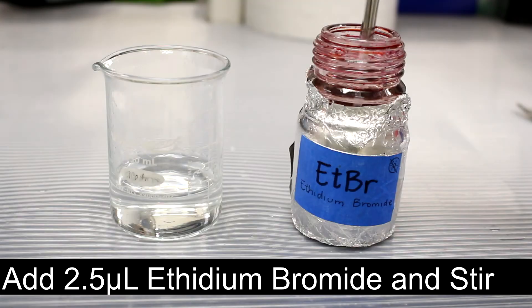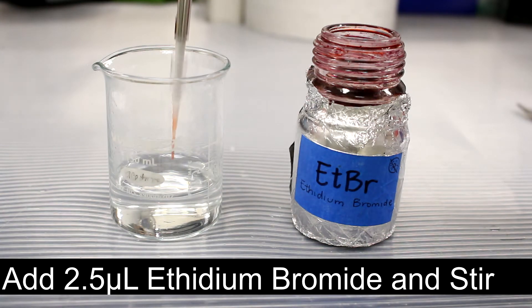2.5 microliters of ethidium bromide is then added to the cool agarose solution and stirred.